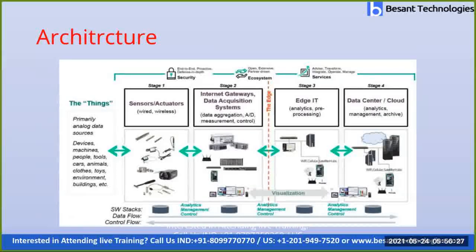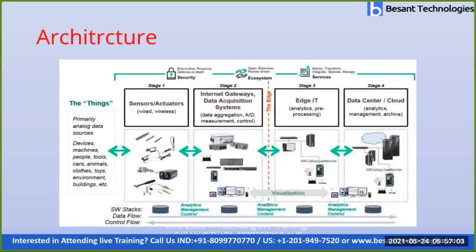Stage two is internet gateways or data acquisition systems, which are used to make communication between two internet devices. For example, a temperature sensor will observe the temperature in the environment, process it in the embedded device, and send it to the data center or cloud. To send information from sensors to the cloud we need an internet gateway.